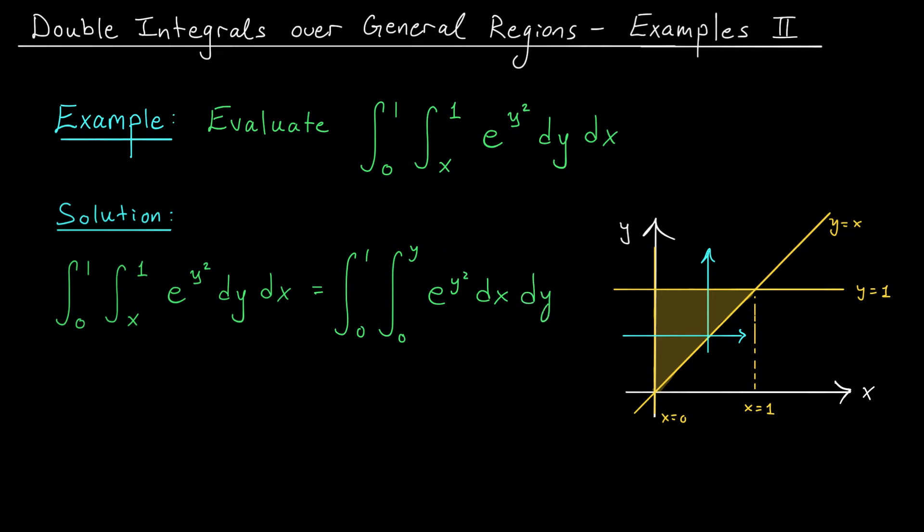All right, let's try our original plan again. We'll find an antiderivative for this expression, but now we're integrating with respect to x. An antiderivative for e to the y squared with respect to x is simply x e to the y squared. So we can rewrite this expression as the integral from 0 to 1. We use our antiderivative, x e to the y squared, evaluated from 0 to y, dy.